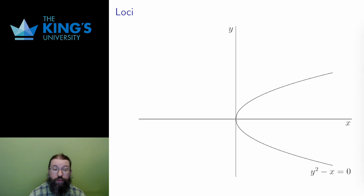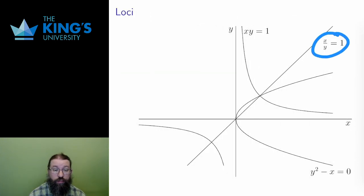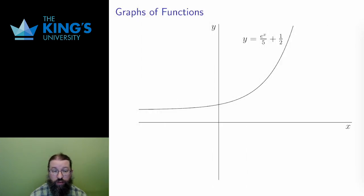Here are some more examples of loci. This diagram shows the locus of y² - x = 0. The locus of xy = 1 has two parts, one in the first quadrant and one in the third. Finally, the locus of x/y = 1 is a straight line, though it excludes the origin, since that would lead to the undefined expression 0/0.